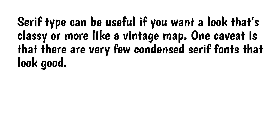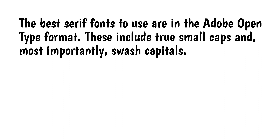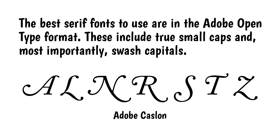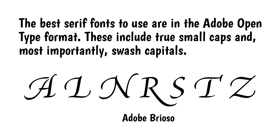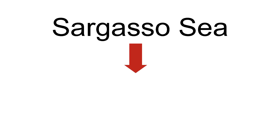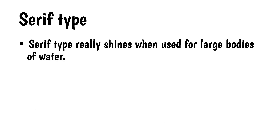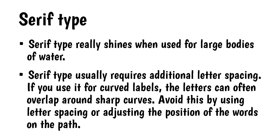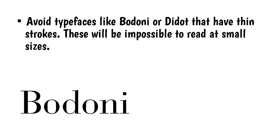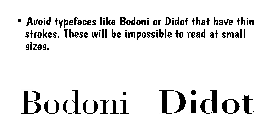Serif type can be useful if you want a look that's classy or more like a vintage map. One caveat is that there are very few condensed serif fonts that look good. The best serif fonts are in Adobe OpenType format — these include true small caps and, most importantly, swash capitals, which can really set your type apart from the ordinary. Serif type really shines for large bodies of water, but usually requires additional letter spacing. If you use it for curved labels, letters can overlap around sharp curves — avoid this by using letter spacing or adjusting position on the path. Avoid typefaces like Bodoni or Didot that have thin strokes, as they'll be impossible to read at small sizes.